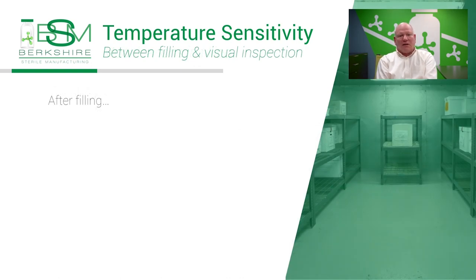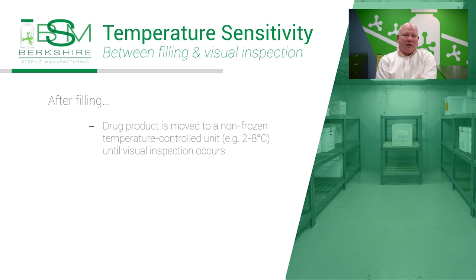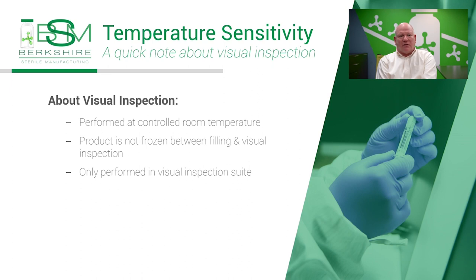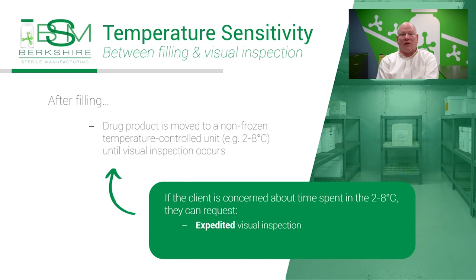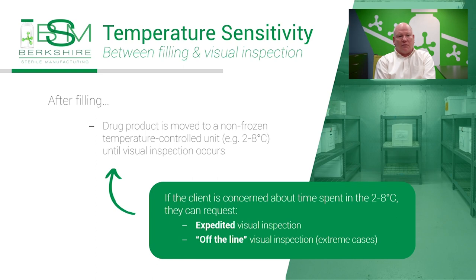Once product is filled, it's removed immediately to the work-in-process cooler. The coldest work-in-process cooler we have is 2 to 8 degrees Celsius. This product will remain here until the visual inspection team is able to inspect the product. We've never inspected products in the 2 to 8 degree temperature-controlled units, and we do not freeze product between filling and visual inspection. If the client is concerned about the time spent in the 2 to 8 degree cooler, they can request expedited visual inspection so the product can be immediately inspected.